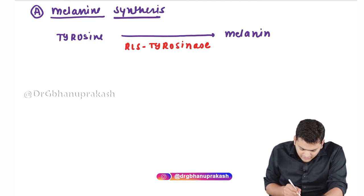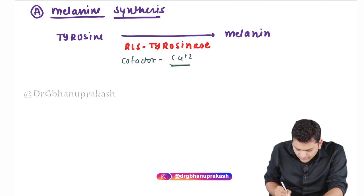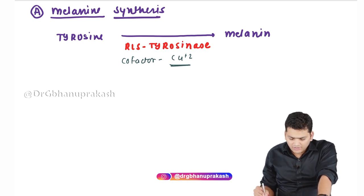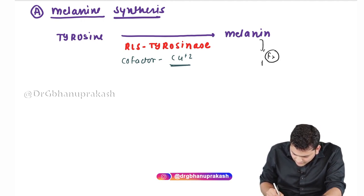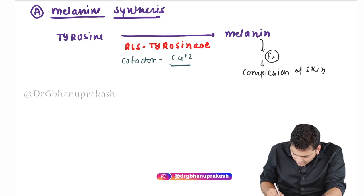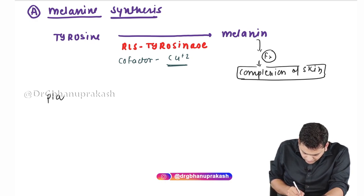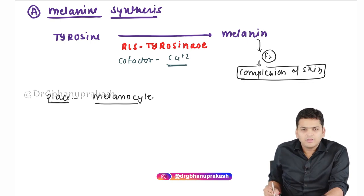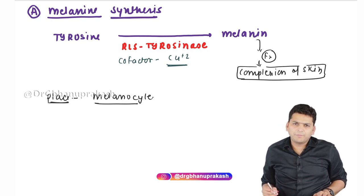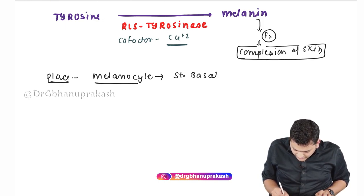For tyrosinase, we require copper as a cofactor. This is how melanin is synthesized. The function of melanin is determining the complexion of the skin — the more the melanin, the darker the complexion. This reaction takes place in the melanocytes, which are present in the stratum basale of the epidermis, the lowermost layer of the epidermis.